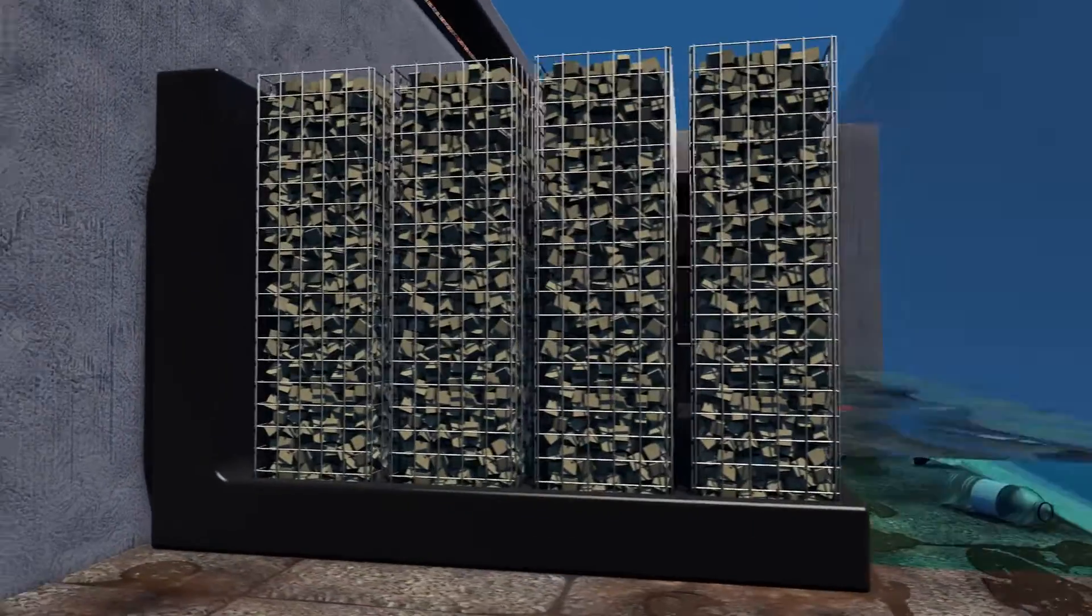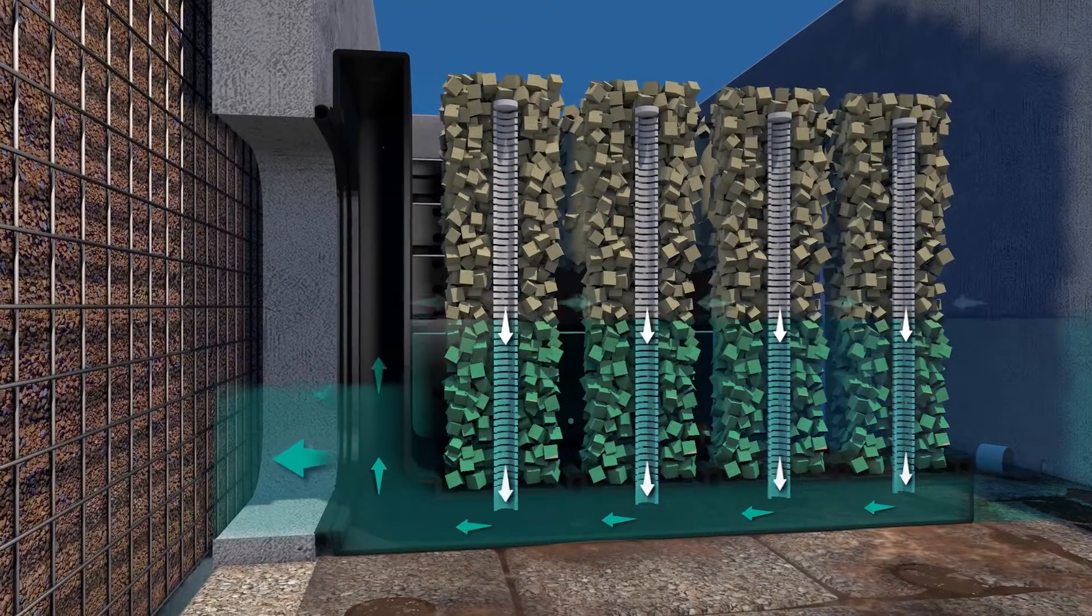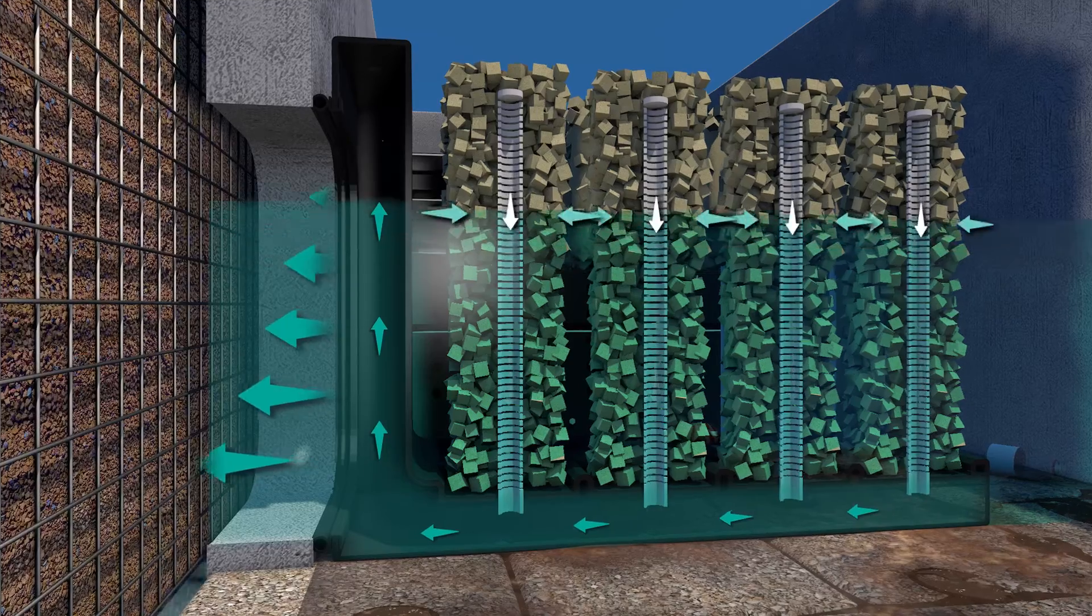Stormwater then travels through the pre-treatment filter boxes that provide additional treatment of total suspended solids and hydrocarbon removal.